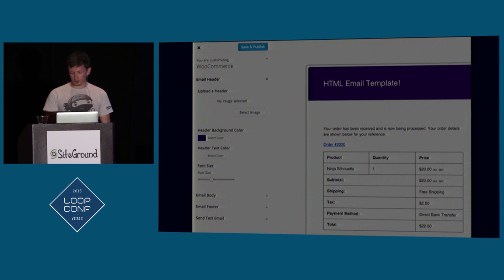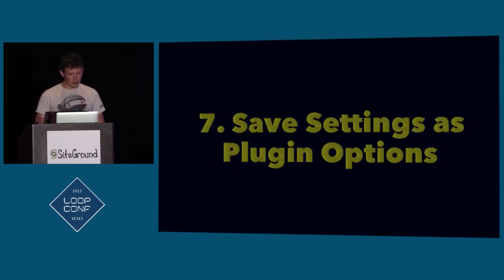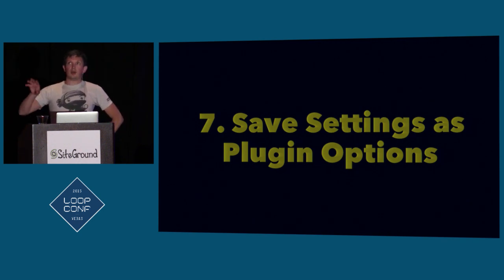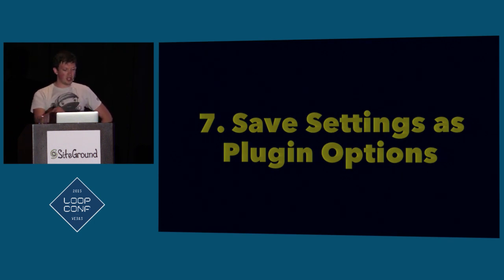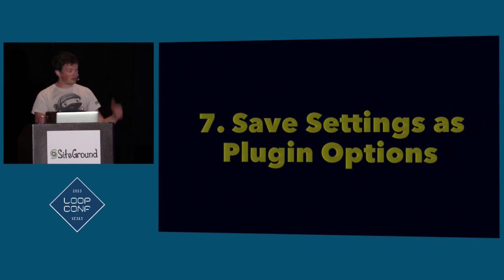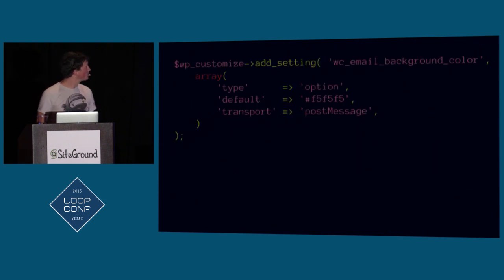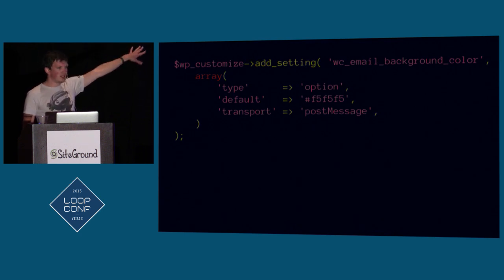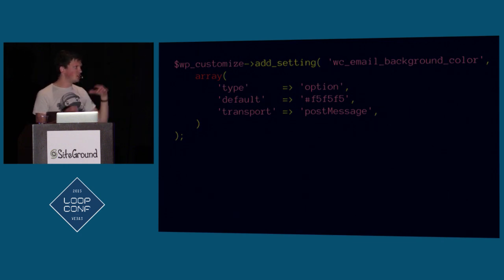There is one more critical step — and I've forgotten this before and wondered why things were breaking. You need to save all your settings as plugin options, not theme modifications. The WordPress customizer used to be called the WordPress Theme Customizer, so everything was saved as a theme modification, meaning if you switch themes you lose everything. When adding your settings, just add 'type => option.' If you omit that, it'll be saved as a theme modification tied to your theme. You almost always want to save it as a plugin option.